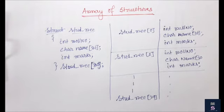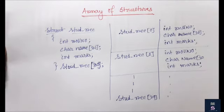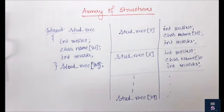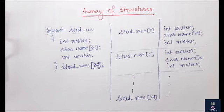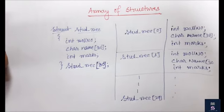Now let us consider another example: if I do not use this array of structure declaration, what will happen? How can I solve this problem? So far we have just told you that array of structure is nothing but, instead of declaring multiple variables, we can declare an array of structure in which each element of the array will represent a structure variable. Let us consider a simple example.